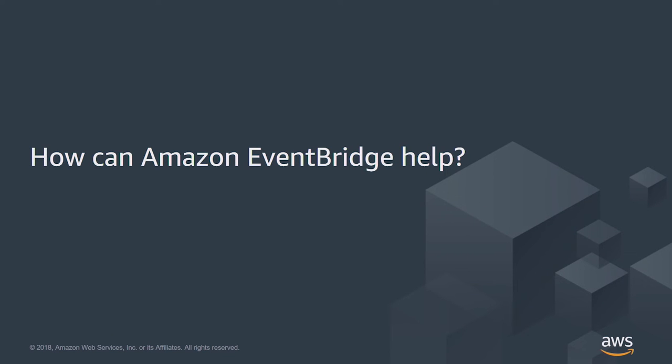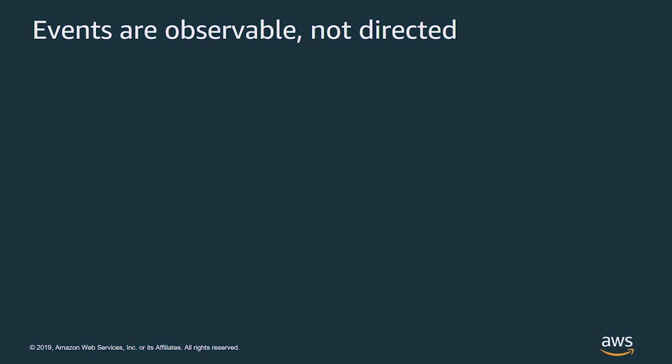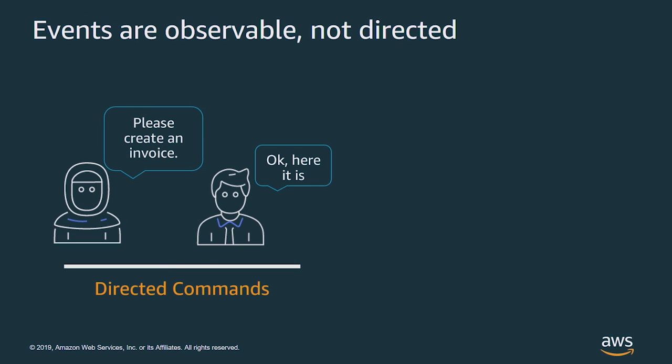So how can Amazon EventBridge help with these problems? Well, events are central to EventBridge, and events are observable and not directed. The previous tightly coupled APIs used directed commands, whereas an event-driven approach is observable. In a command model, each command is explicitly issued to a specific recipient. So the person on the left says, "please create an invoice," and the person on the right hears that and takes action.